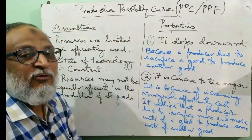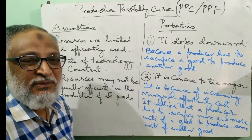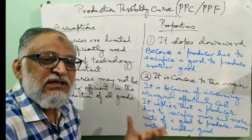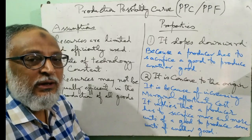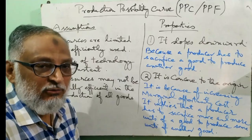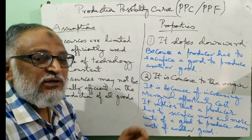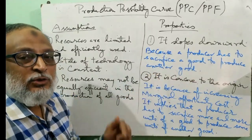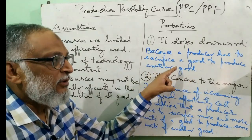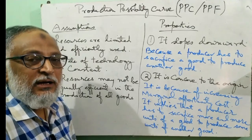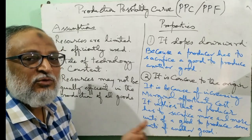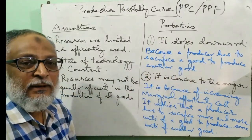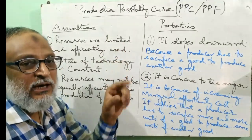Now coming to another part: the properties of PPC. There are two very important properties of PPC. Number one: it slopes downward. Whenever we show two variables on the x-axis and y-axis in which there is an inverse relation — that means if we are increasing the production of one and reducing the production of another, there is a negative relation. So if we show this negative relation in the graph, it will have a downward slope. A producer has to sacrifice one good to produce another good because resources are limited. So it is impossible that the curve will be a horizontal line, a vertical line, or an upward slope.